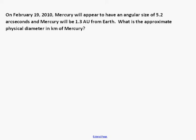The question we'll be working on in this video reads: on February 19th, 2010, Mercury will appear to have an angular size of 5.2 arc seconds and Mercury will be 1.3 AU from Earth. What is the approximate physical diameter in kilometers of Mercury?